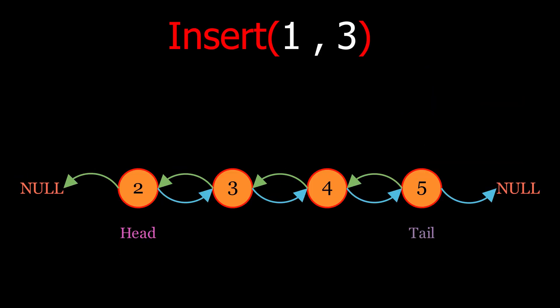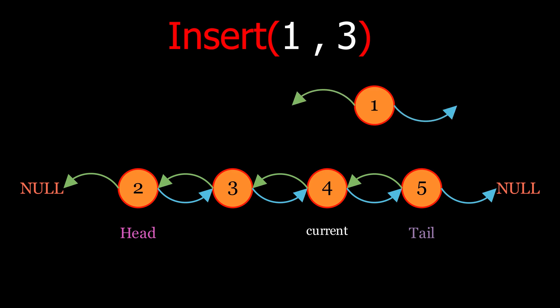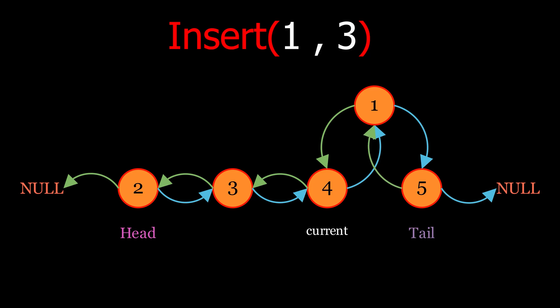To insert at a specific position in a doubly linked list, such as between nodes with values 4 and 5, first traverse the list to reach the node just before the desired position. Once at the correct location, create the new node with the given data. Set the previous pointer of the new node to point to the current node, and the next pointer of the new node to point to the node next to current. Then update the next pointer of the current node to point to the new node, and update the previous pointer of the node now after the new node to point to the new node. This is a linear time operation because we need to traverse the list first.